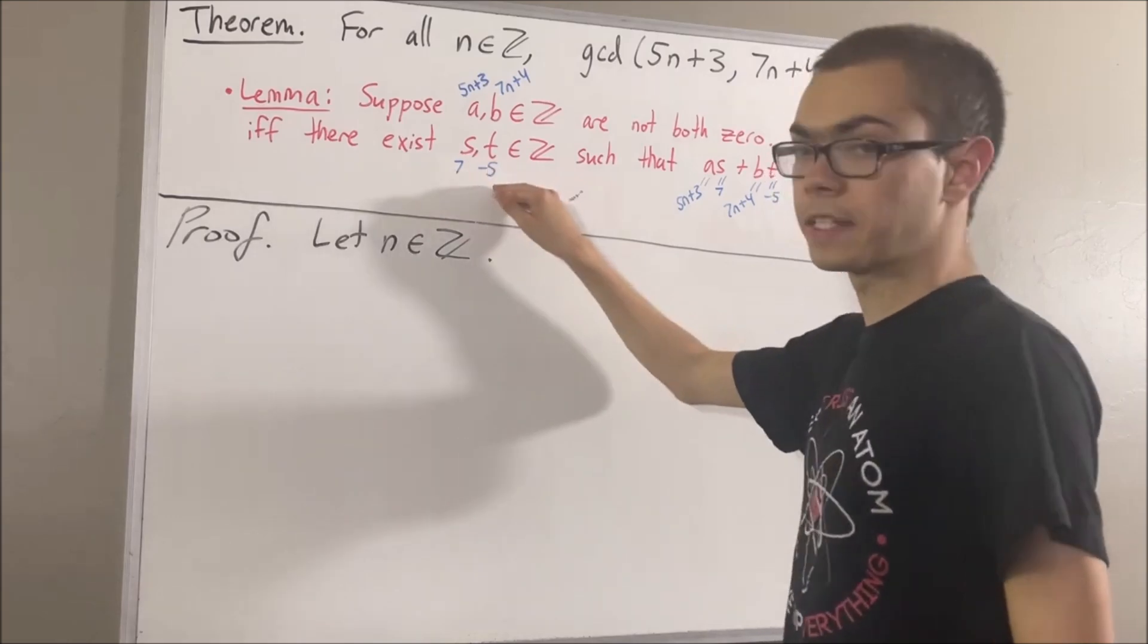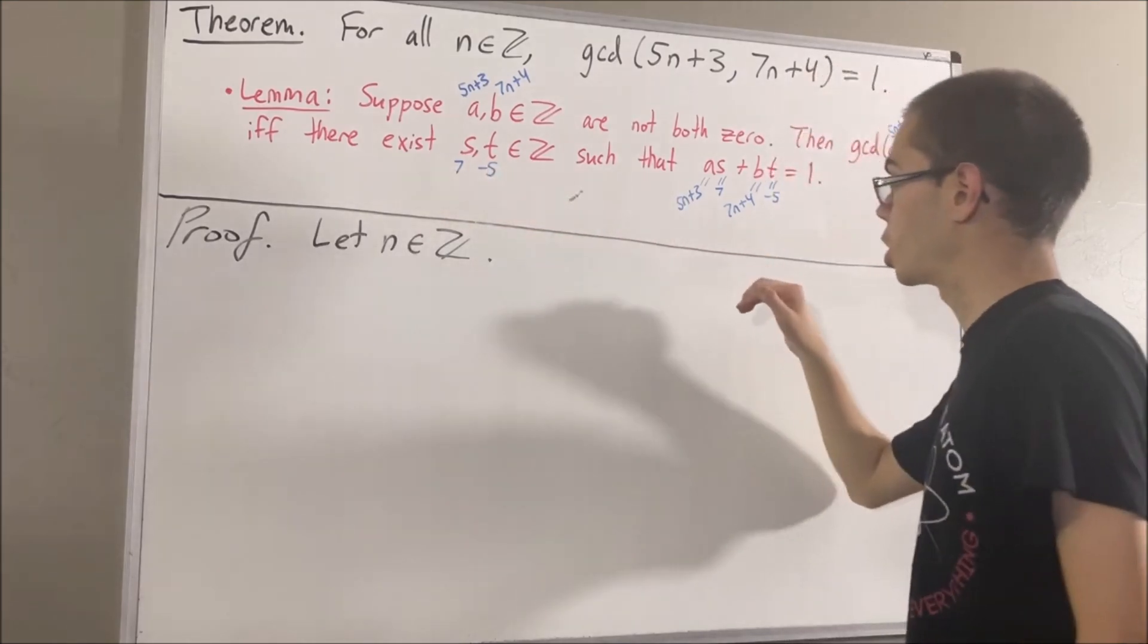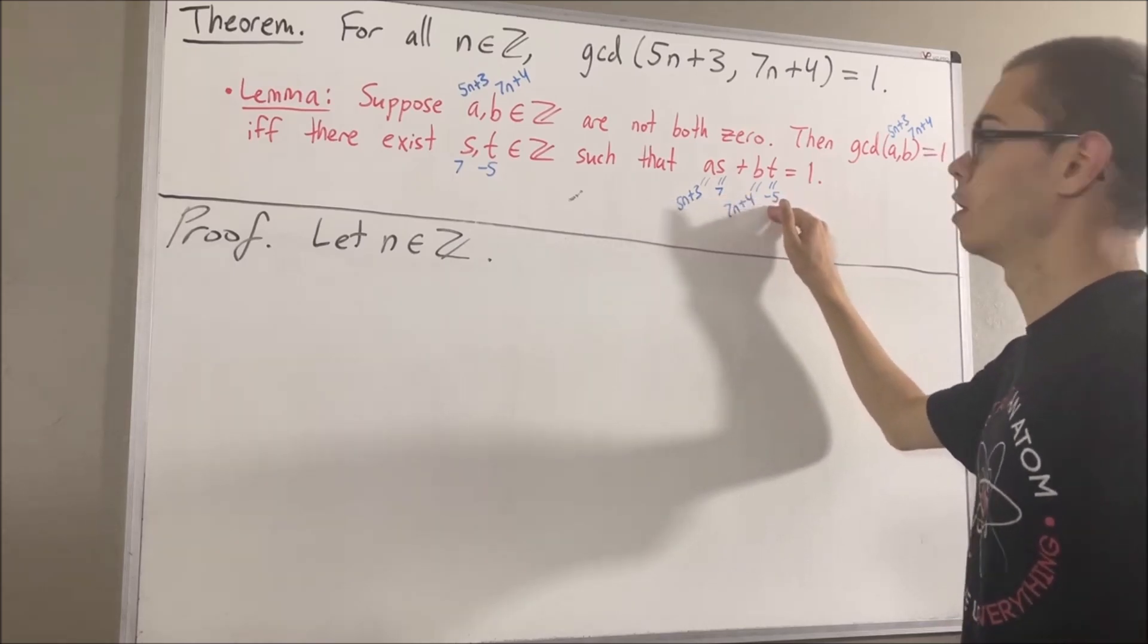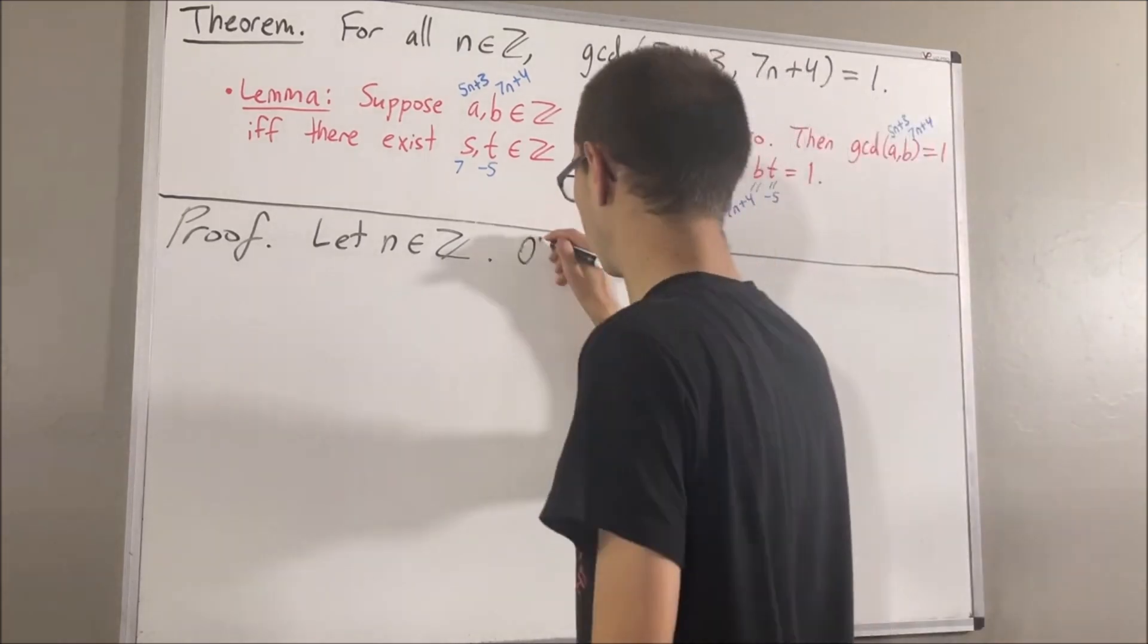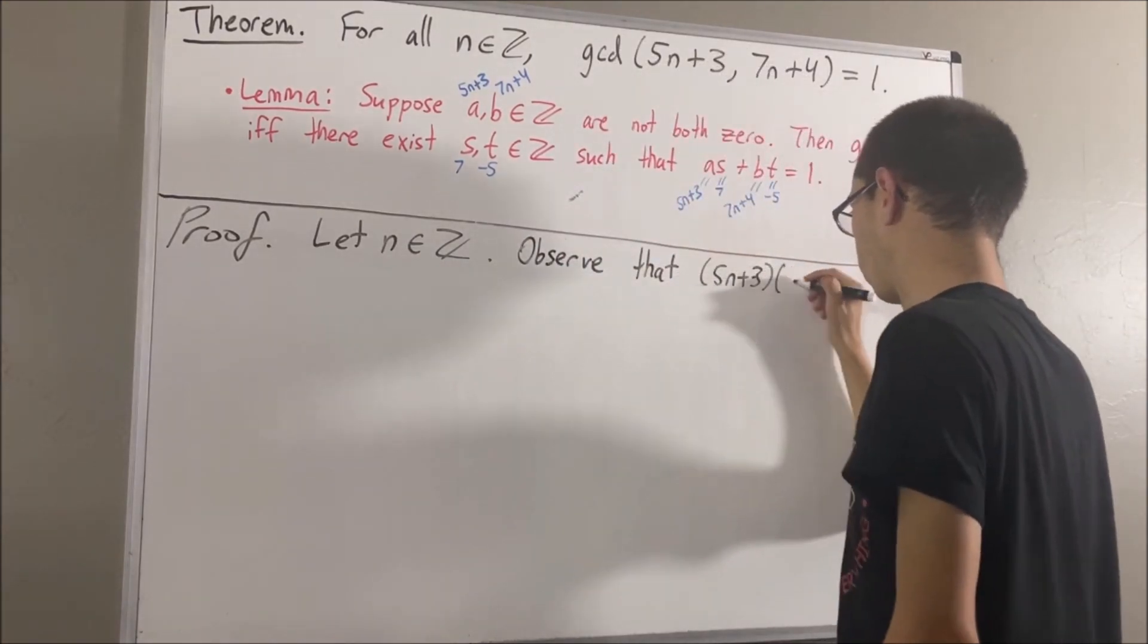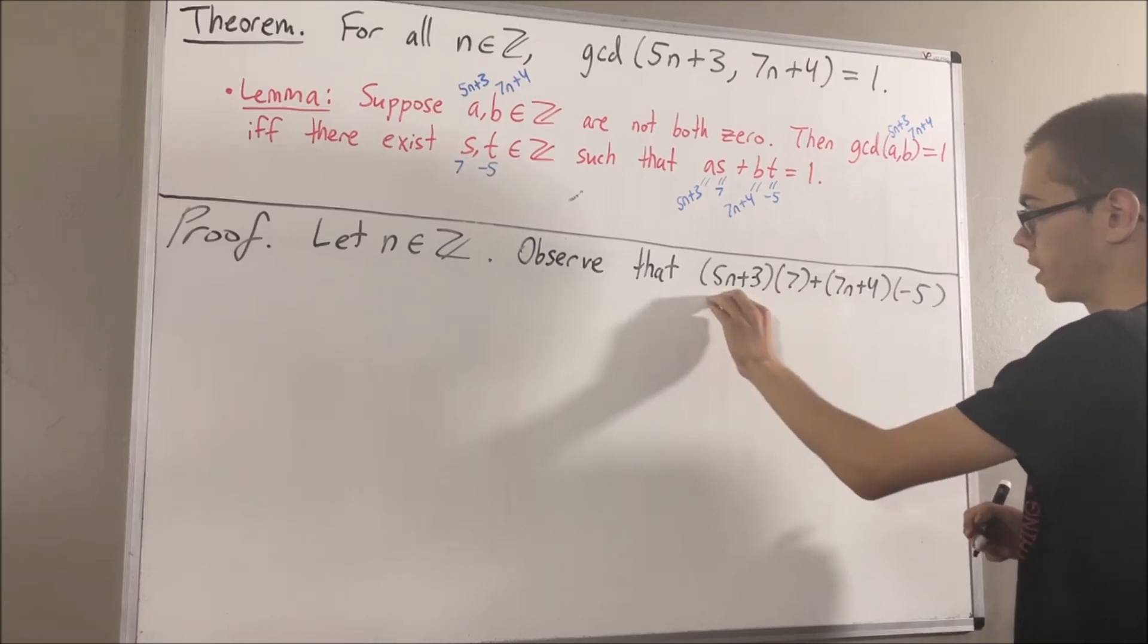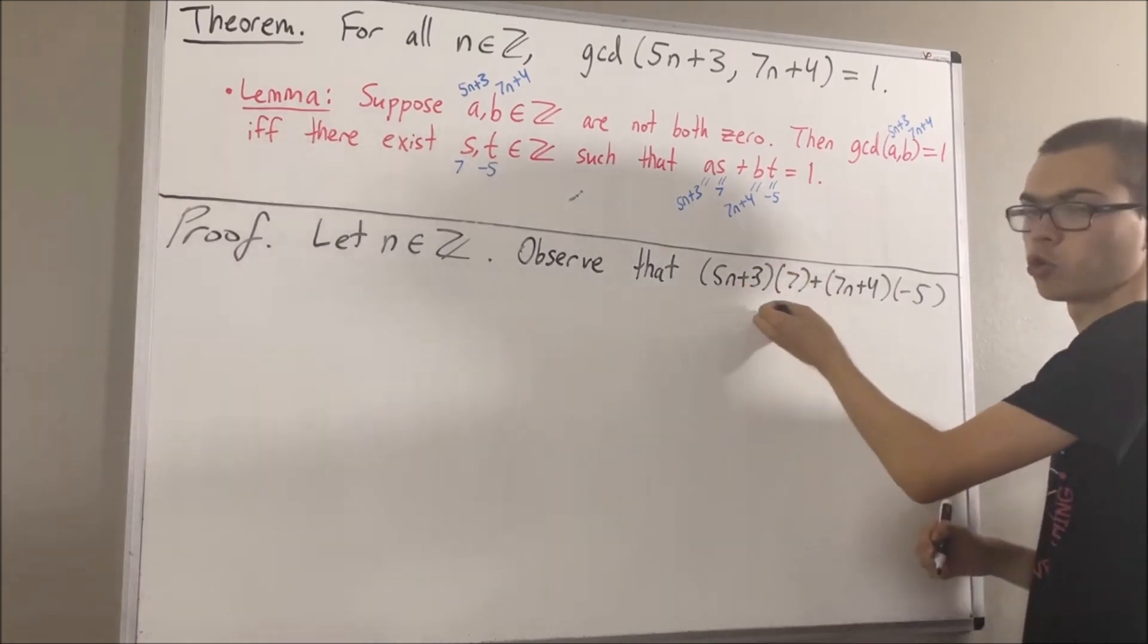So, with those choices of s and t, all we got to do is show that if we compute 5n plus 3 times 7 plus 7n plus 4 times negative 5, we get 1. Well, if we distribute the 7 across this parentheses, we get 35n plus 21.